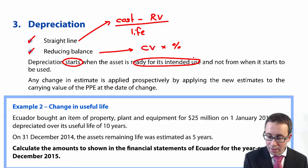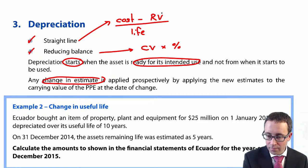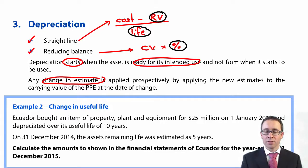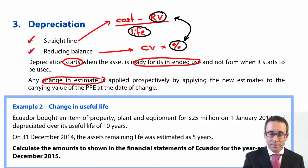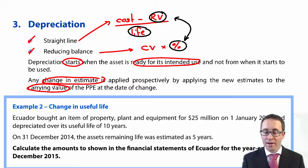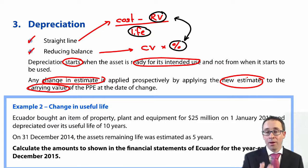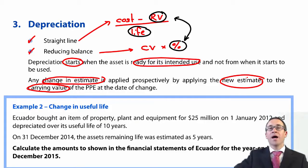The key area now is looking at changes in estimates. The estimates you might change include the residual value, the useful life, or the percentage applied to your reducing balance. You could also change the method from straight line to reducing balance or vice versa. Whatever estimate has changed, you apply the new estimate to the carrying value at the date of change.